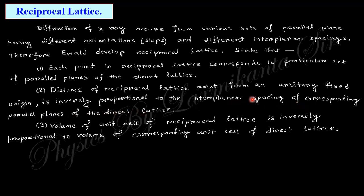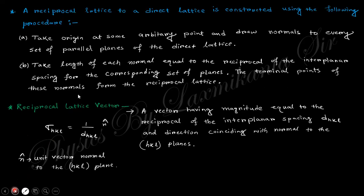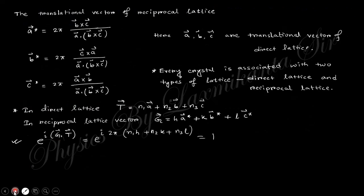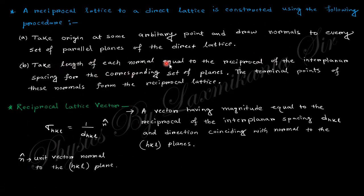The distance between parallel planes in the direct lattice is inversely proportional to the reciprocal lattice point distance. The volume of the unit cell of the reciprocal lattice is inversely proportional to the volume of the corresponding unit cell of the direct lattice. The construction procedure is: take an origin at an arbitrary point, draw normals to every set of parallel planes, and set the length of each normal equal to the reciprocal of the interplanar spacing.